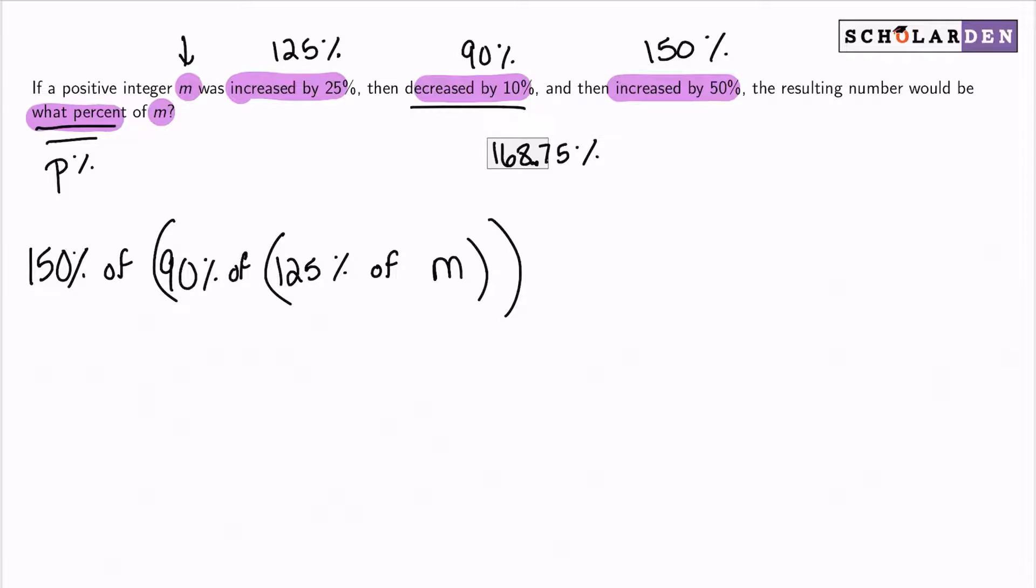So we are essentially applying 3 percentages to the same number. But remember, you take m, increase it by 25%, then the result decreased by 10, then the result increased by 50. So I believe that should have been stated in the problem, but no worries. So here we are 125% of m, we would write that as 1.25 multiplied by m. Again, to convert a percent to a decimal, you move the decimal place over two times.